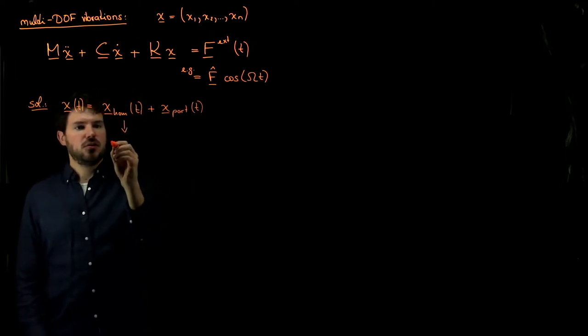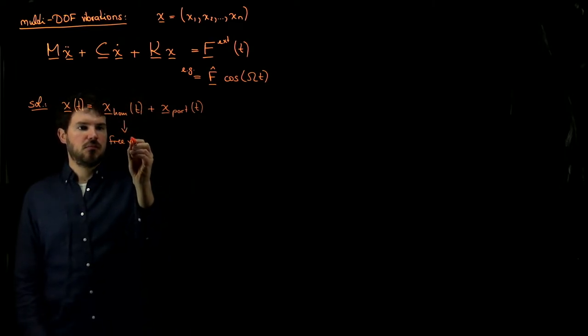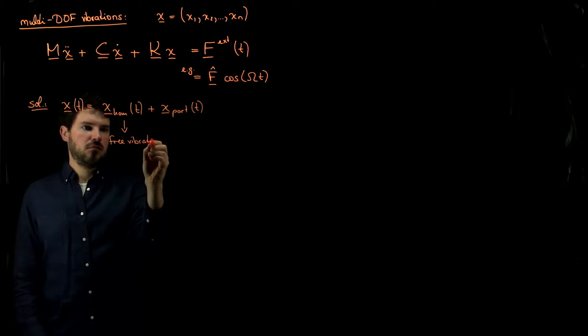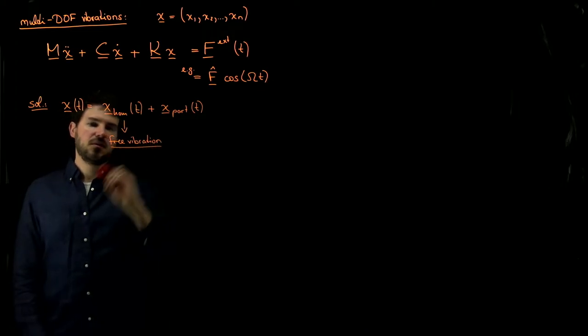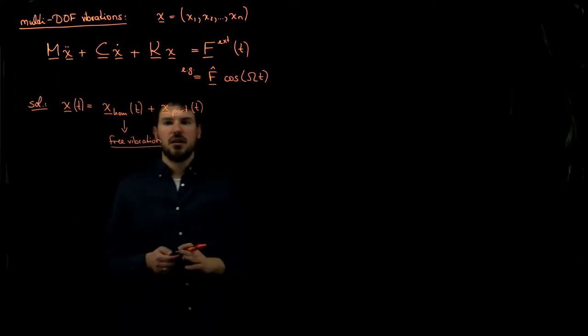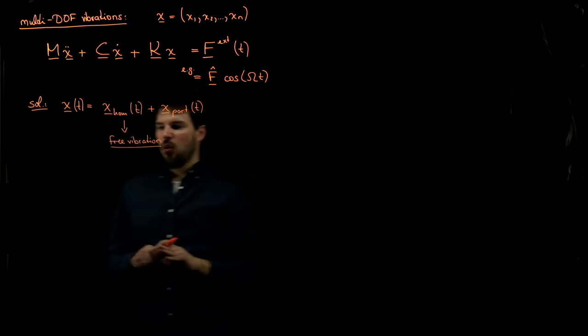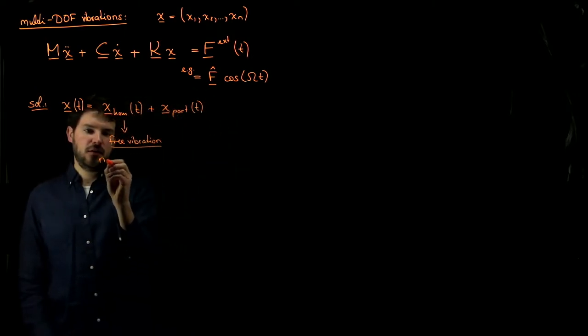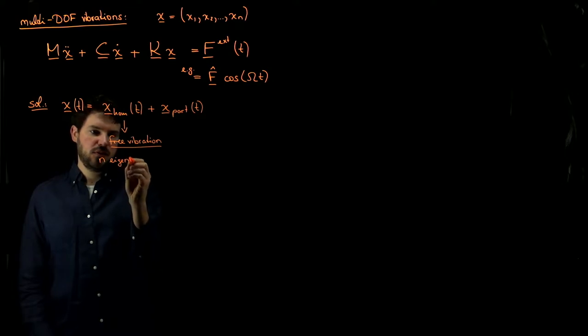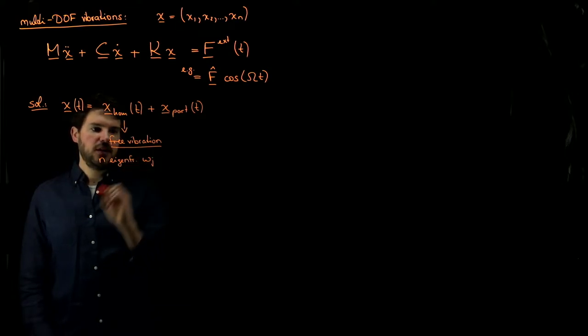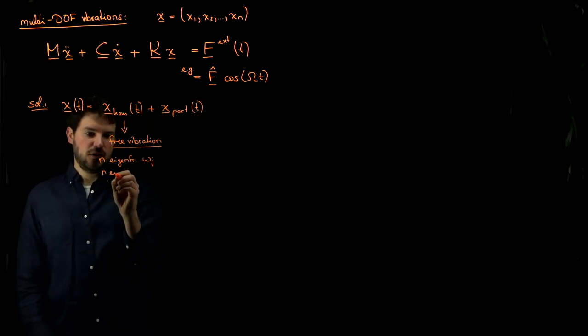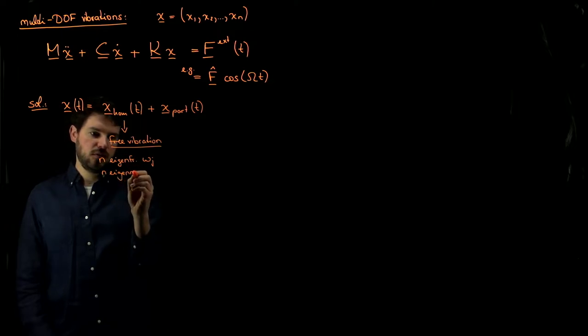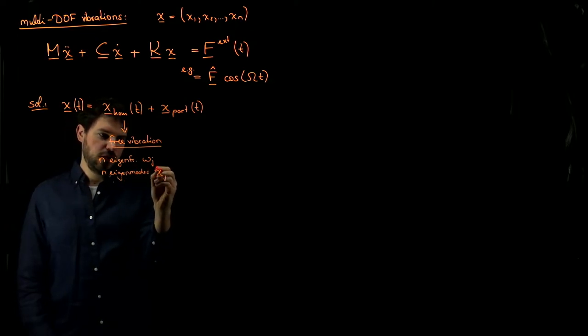Where this over here is the solution of a free vibration. And this is exactly what we discussed previously, where we have to find all n eigenfrequencies omega j, and we have n associated eigenmodes that we called x hat j.